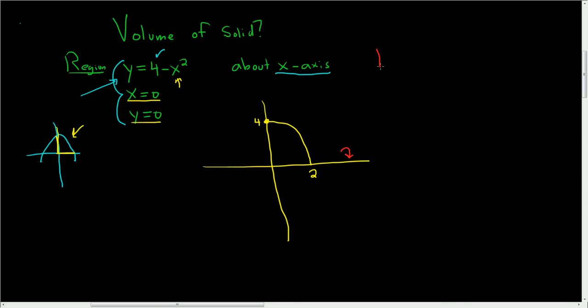Let's go ahead and use the disk method. Whenever you use the disk method, your rectangles are always perpendicular to the axis. So if we draw a rectangle, it has to look like this.